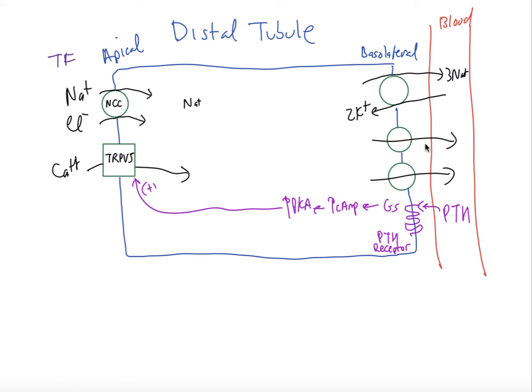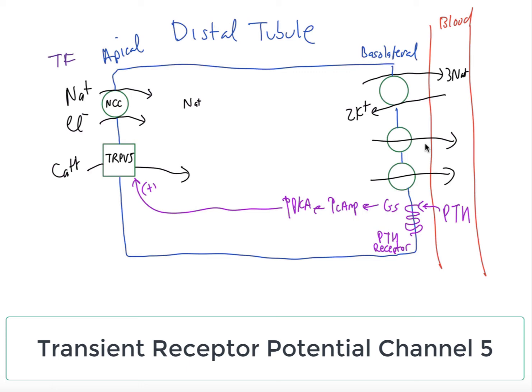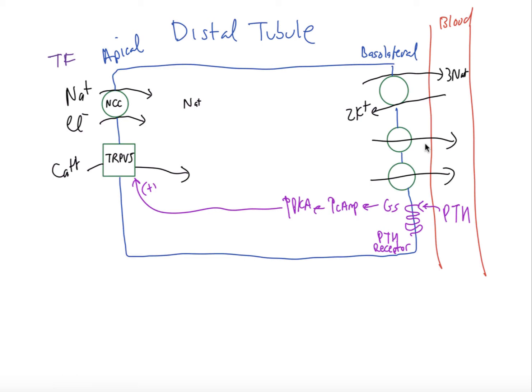They can be reabsorbed on the basolateral side. And also shown here is that there is another channel on the apical side. We talked about the ROMK potassium channel on the thick ascending limb. We have also this TRPV5 channel, which is the transient receptor potential channel 5. This is a calcium channel. And calcium goes through transcellularly, and it can be reabsorbed on the back side. The reason why this channel is important is that it's regulated by the hormone parathyroid hormone, or PTH, which binds to PTH receptors on the basolateral side, coupled to Gs, increases cyclic AMP and PKA, and then that can help activate this channel and allow calcium to be reabsorbed. And one of the important effects of parathyroid hormone is that it helps increase the free ionized calcium levels in the blood. And it does so in part by increasing the reabsorption of calcium from the distal tubule.